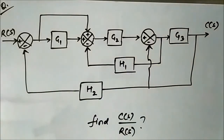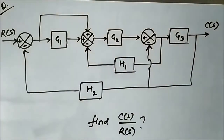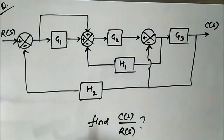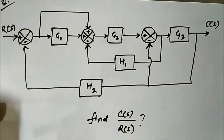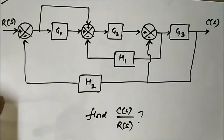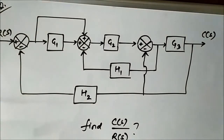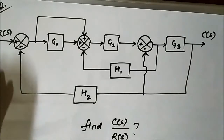Here we have been given a complex system which has many summer blocks and forward path transfer function blocks G1, G2, G3, and feedback blocks H1 and H2 connected in the given way. We have to find out the overall transfer function C(s)/R(s) with the help of block diagram reduction.